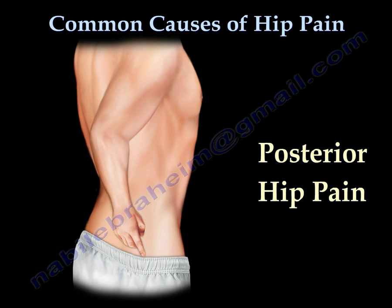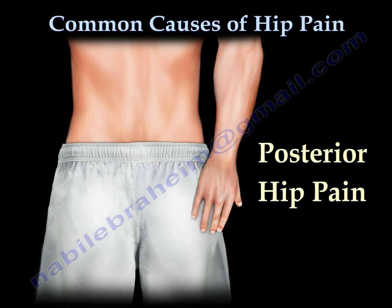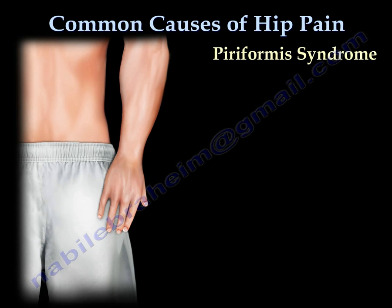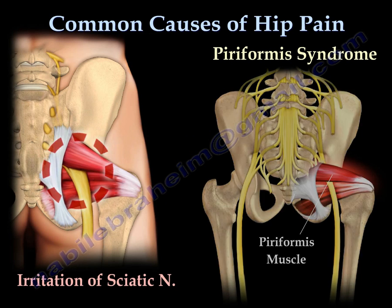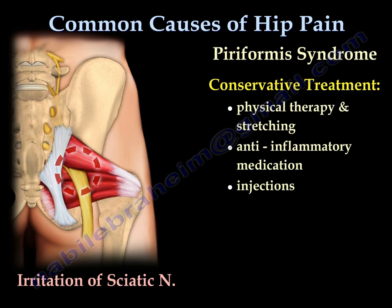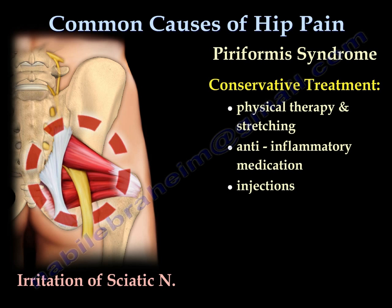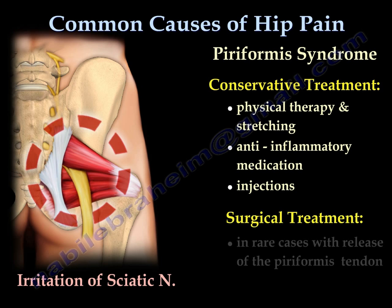Posterior hip pain occurs due to piriformis syndrome. Treatment is usually physiotherapy, stretching, anti-inflammatory medication, and injection. Surgery is extremely rare for severe cases that do not improve with conservative treatment. It is important to note that piriformis syndrome irritates the sciatic nerve.